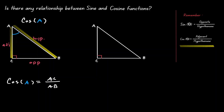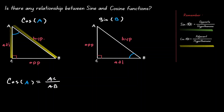On the triangle on the right, let's choose a different reference angle — let's choose angle B — and define the sine of angle B. Let's label our triangle properly. The side opposite 90 degrees is the hypotenuse. The side opposite our reference angle is the opposite side, and the side next to our angle is the adjacent side. Since sine is defined as opposite over hypotenuse, we can define the sine of angle B as AC over AB.